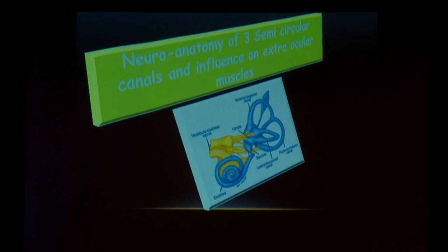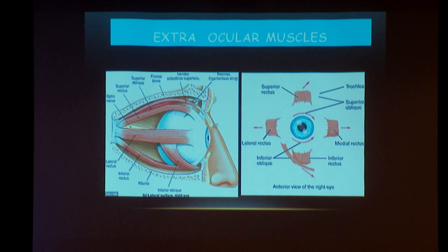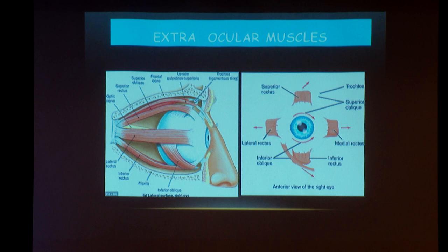Coming to the neuroanatomy of the three semicircular canals and their influence on extraocular muscles: the eye is the window to the inner ear, so we cannot avoid knowing the extraocular muscles and how they act. We have four recti: superior rectus pulls the eye upwards, inferior rectus pulls the eye downwards, medial rectus pulls the eye towards the nose, and lateral rectus pulls the eye towards the lateral canthus.